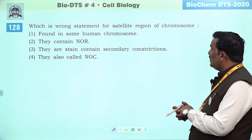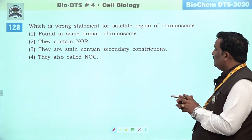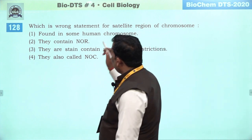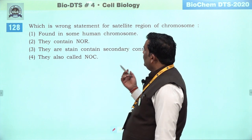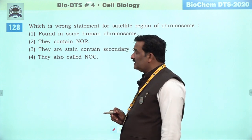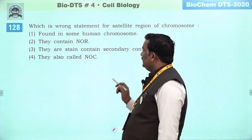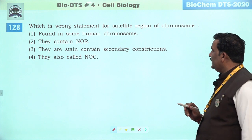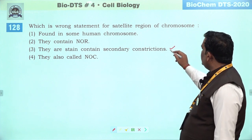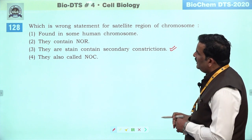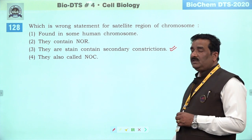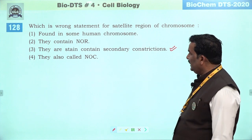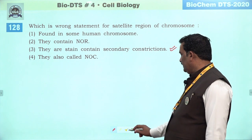Next question: which is wrong statement for the satellite region of the chromosome. NCRT mein likha hai — non-stained part hai. Inhein hum NOR — nucleus organizer region — maan sakte hain. Kuch human chromosomes mein dekh bhi sakte hain. They are stained — inhein non-stained part kaha hai NCRT ki line hai. Isliye wrong statement ke naam se yeh third right answer mil raha hai. They are also called NOC — nucleus organizer chromosomes ke naam se bhi jaante hain. Third is the right answer.